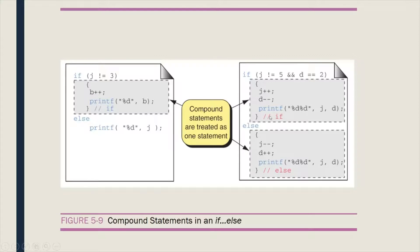We also have the else statement. If the expression is false, those compound statements will be executed — they are treated as one because they are enclosed in curly braces. Those statements are: decrease the value of j by one, increase the value of d by one, and print the values of j and d.